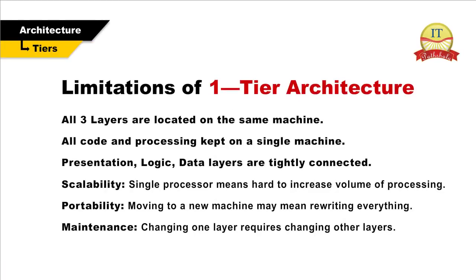Limitations of one-tier architecture: All three layers are located on the same machine, and all code and processing are kept on a single machine. Presentation and logic data layers are tightly connected. Scalability is limited since a single processor makes it hard to increase volume of processing. Portability is an issue as moving to a new machine may mean rewriting everything. Maintenance is difficult because changing one layer requires changing other layers.